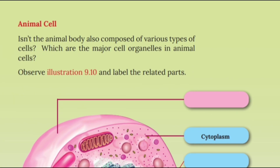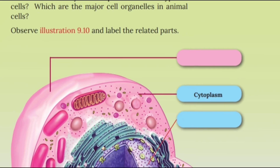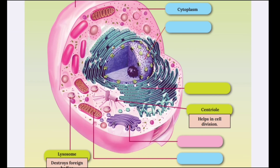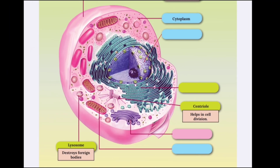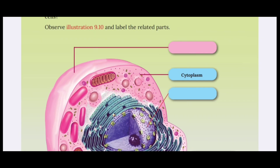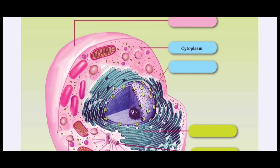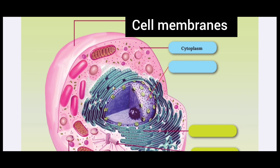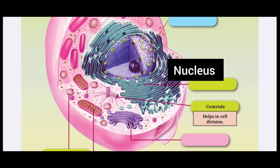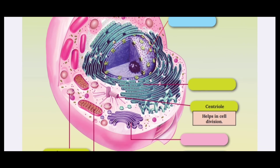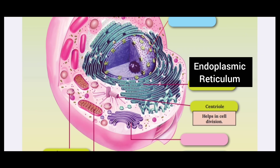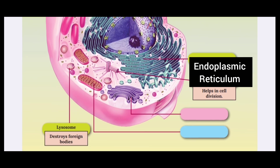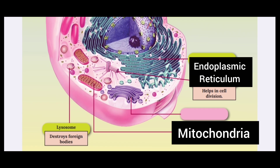We will learn about plant cells and organelles. Cells have a cell membrane, cytoplasm, nucleus, endoplasmic reticulum, centriole, mitochondria, and lysosome. Centrioles are present in animal cells and help in cell division.